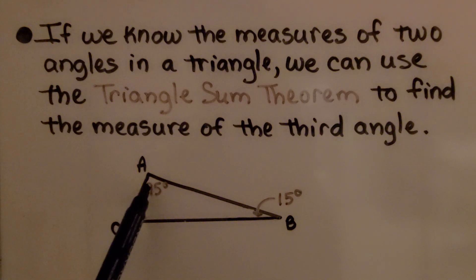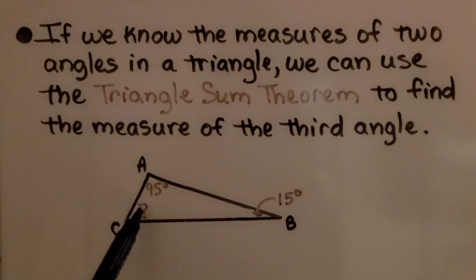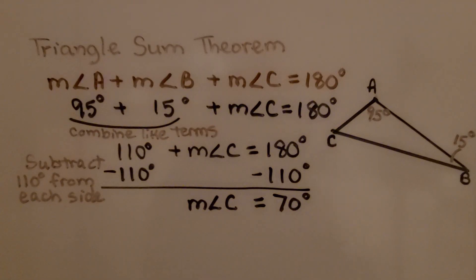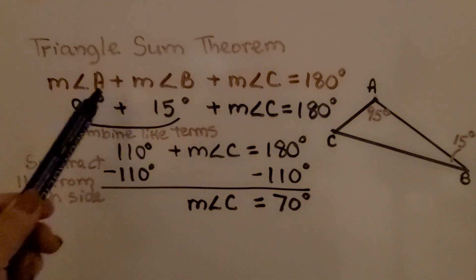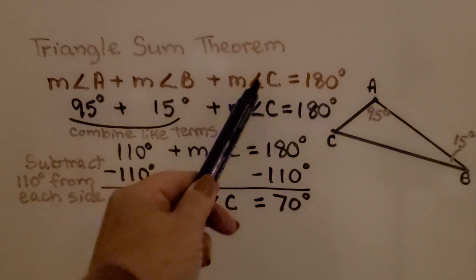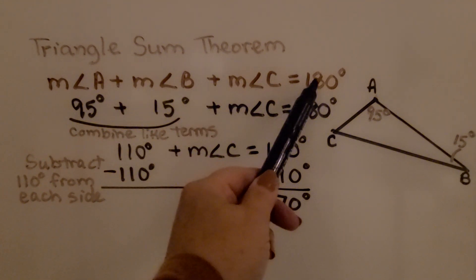If we know this angle is 95 degrees and this one is 15 degrees and we need to find the third one, we can add these together and subtract them from 180. The Triangle Sum Theorem says the measure of angle A plus the measure of angle B plus the measure of angle C is equal to 180 degrees.